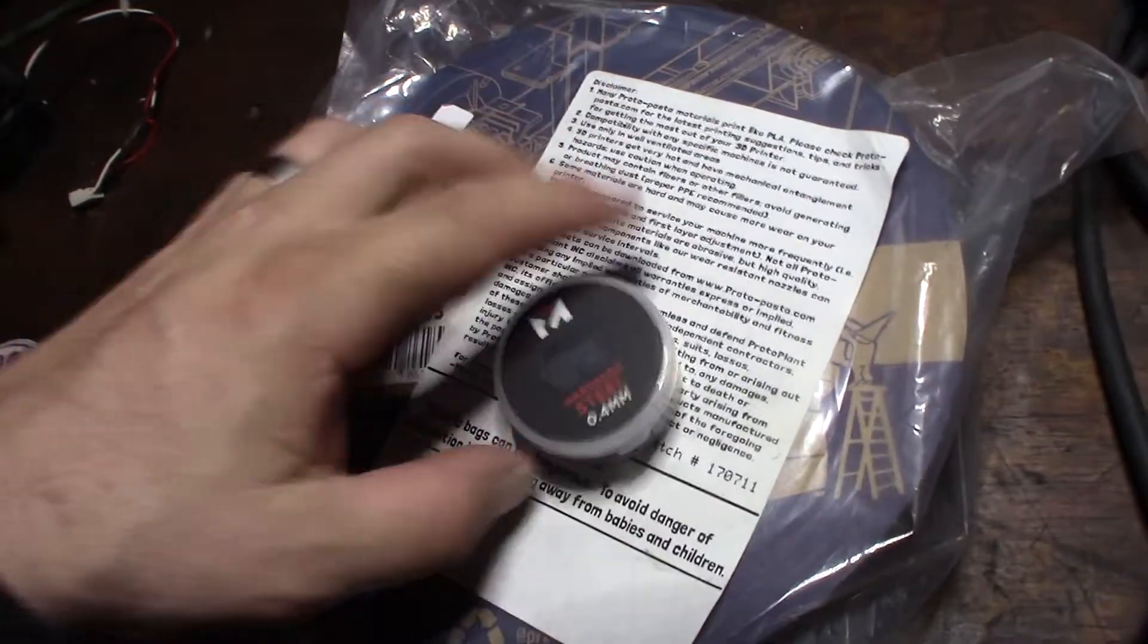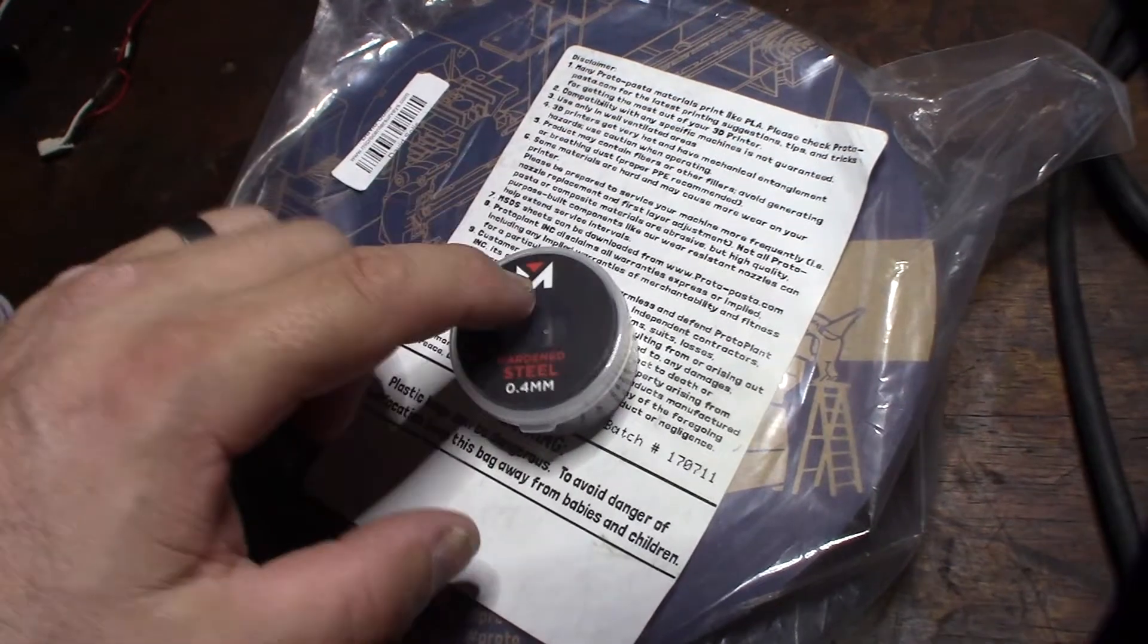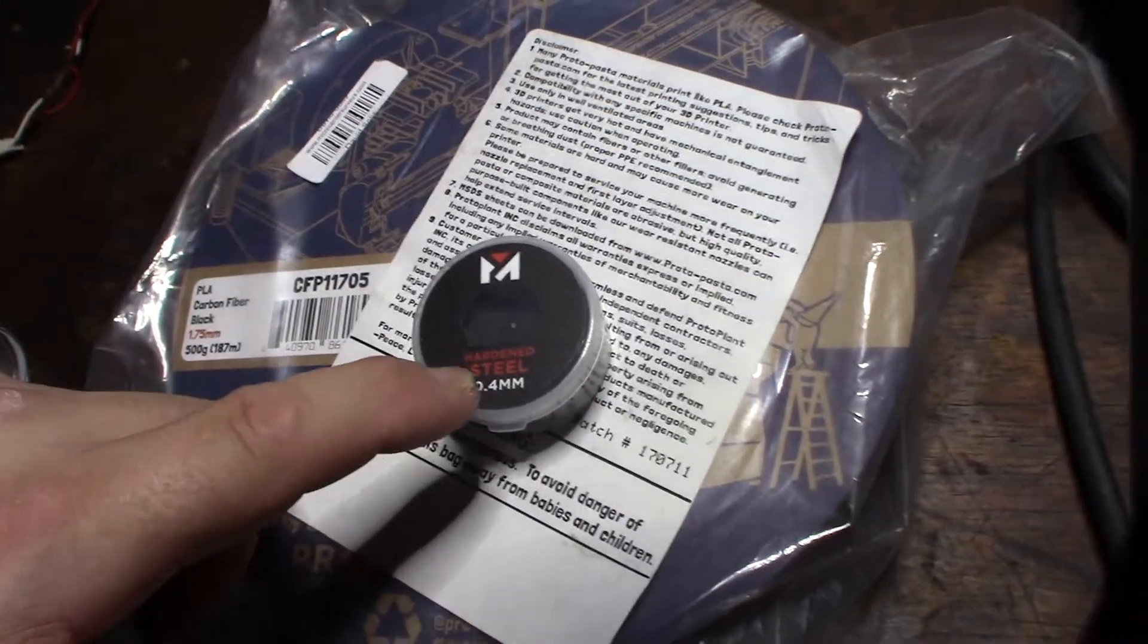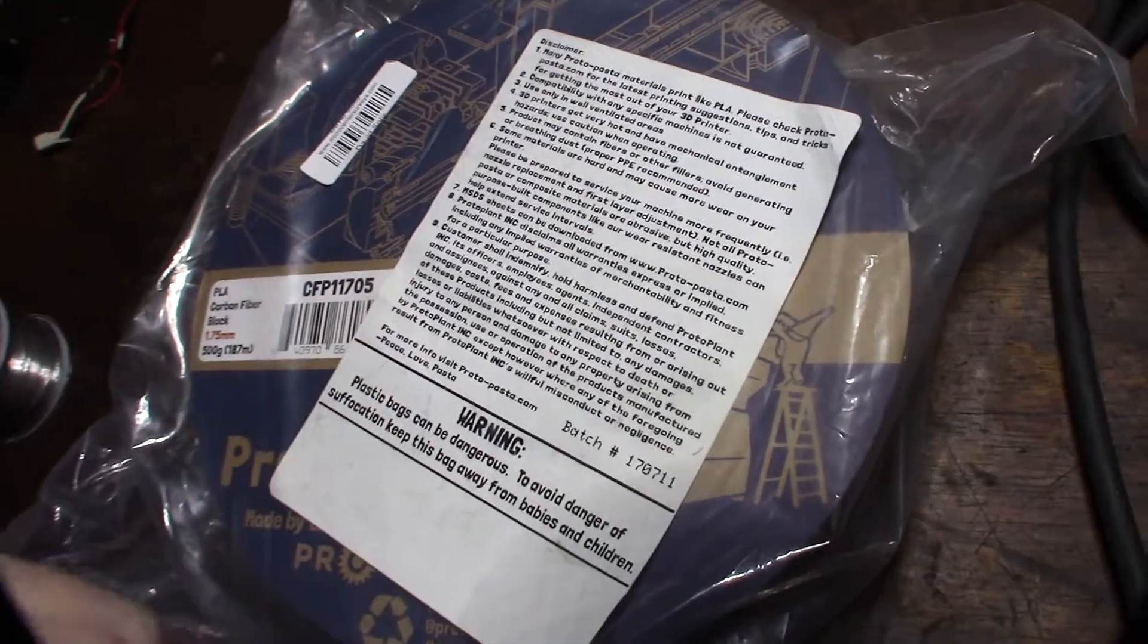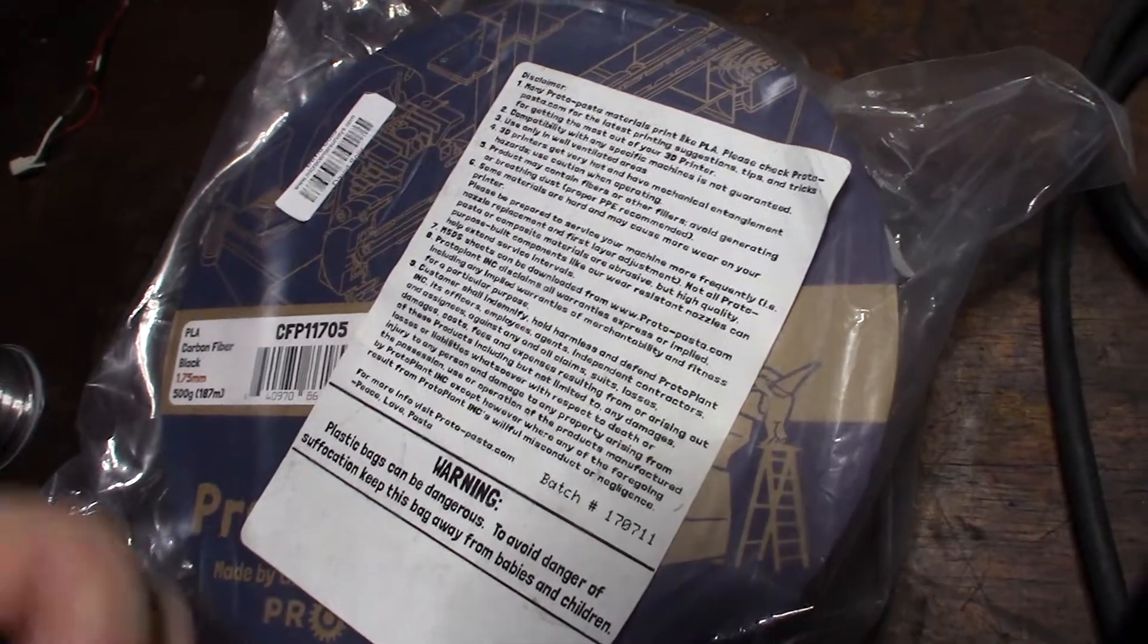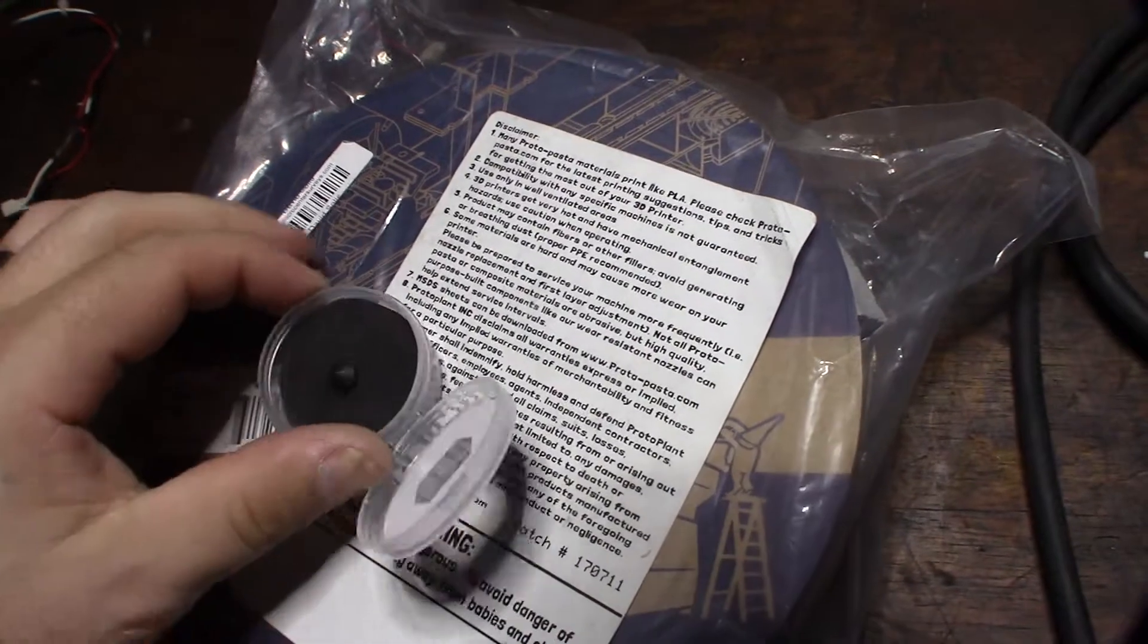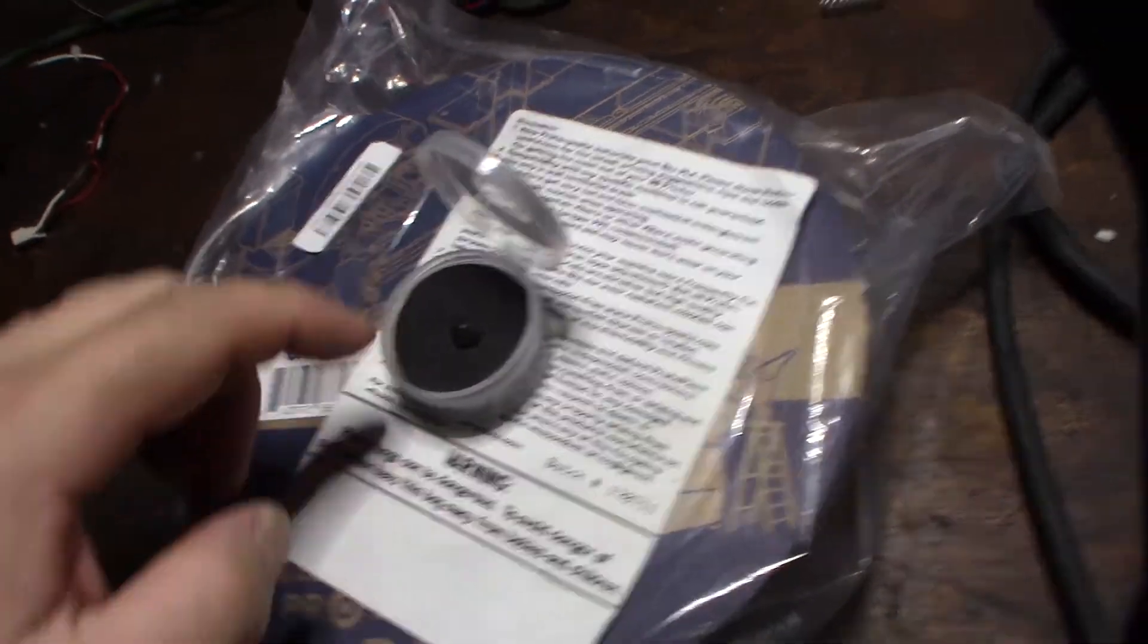But if you're going to be printing with this stuff, I had already bought this. It's, I forget the name of the company. It's here locally in Costa Mesa. But it's a hardened tool steel tip for an E3D printer. And if you watch my previous videos, I just converted my printer bot to E3D.